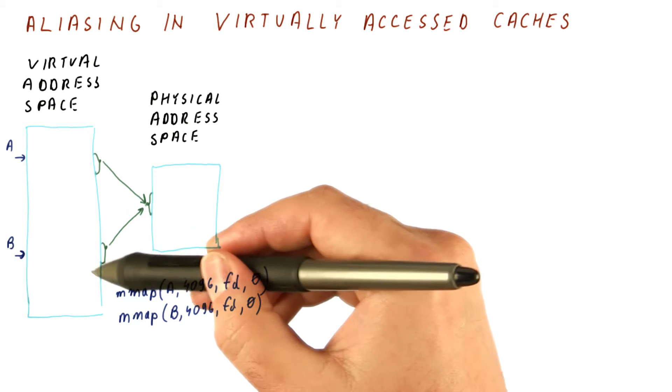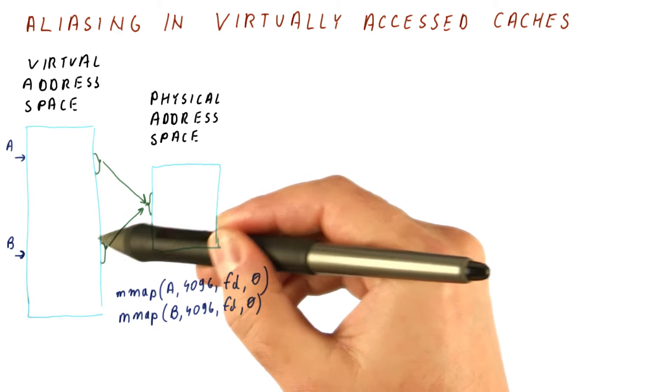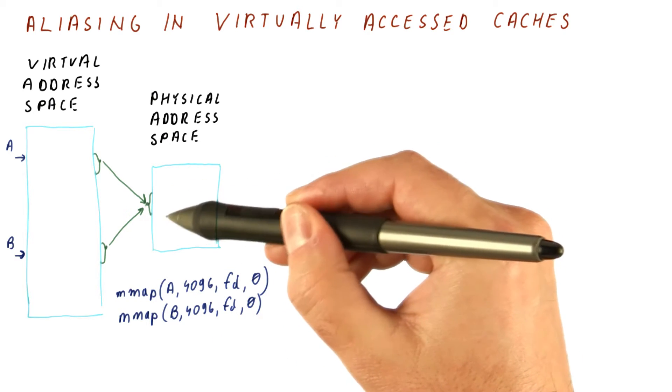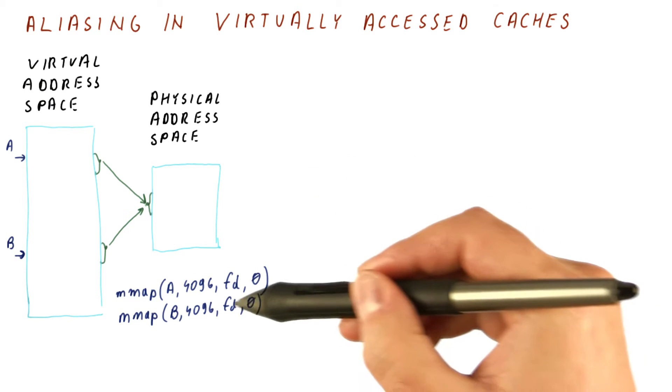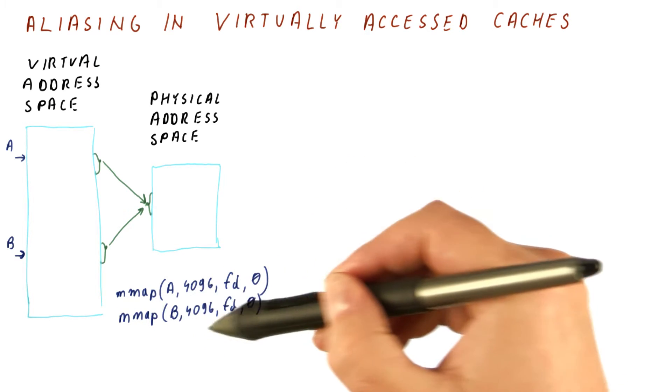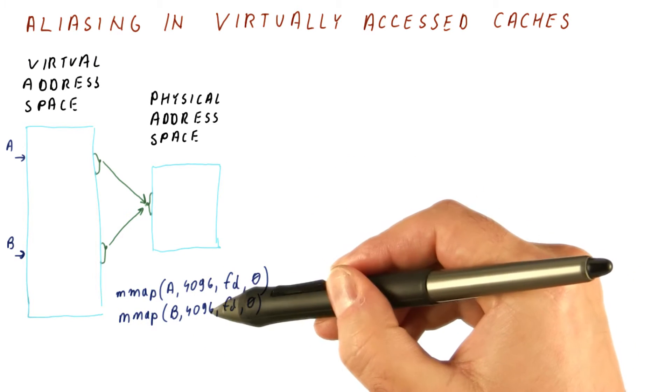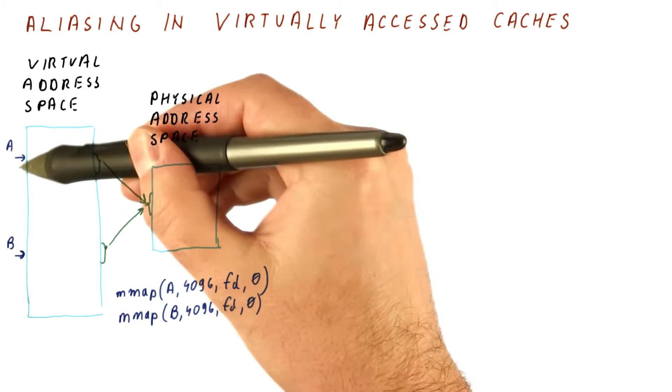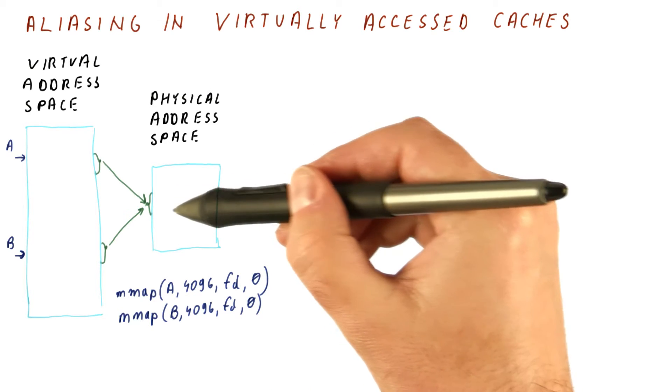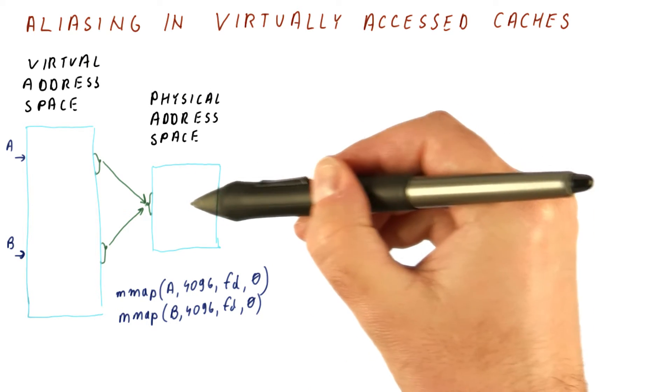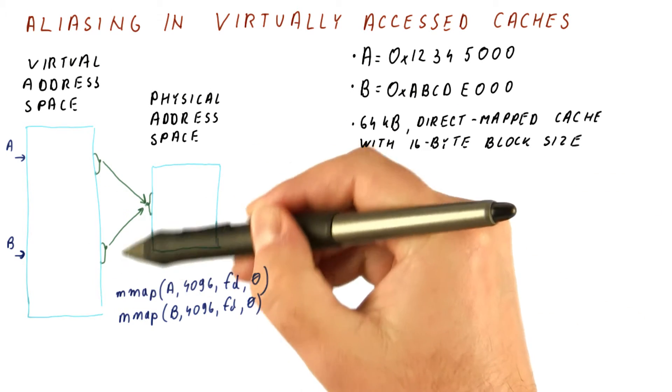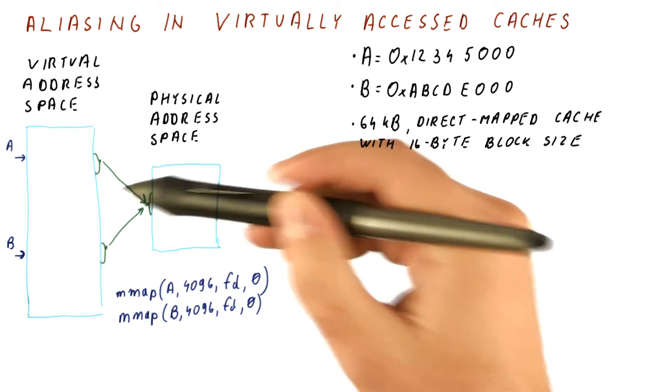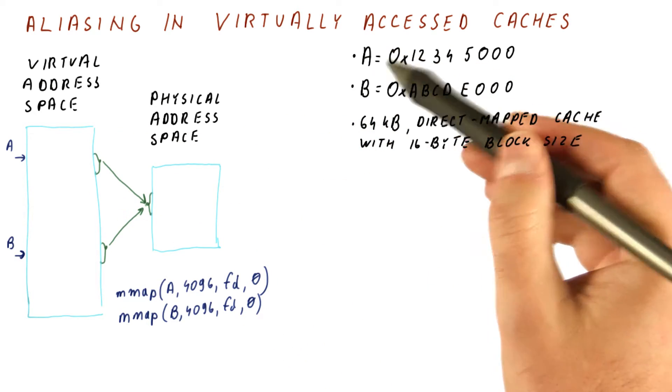The problem occurs when another page in our virtual address space is also mapped to the same physical addresses. For example, when doing an mmap of the same part of the same file to another address. So now what we have is two virtual addresses will actually refer to the same physical location. To see why this is a problem in a virtually accessed cache, let's look at two specific addresses.